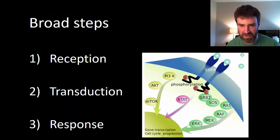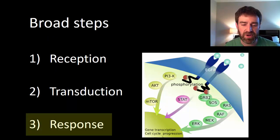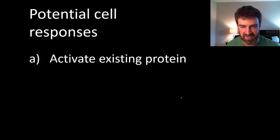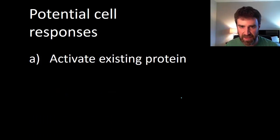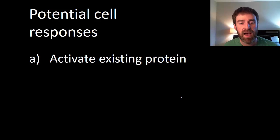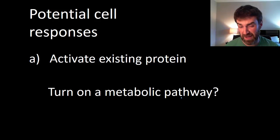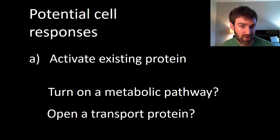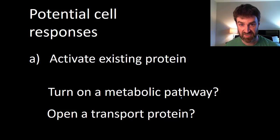Finally, we can talk about the cell's intended response. This falls into two broad categories, sometimes called the cytoplasmic response. In some cases we just want to activate a protein that already exists at the end of the pathway — perhaps turning on a metabolic pathway or opening a transport protein. It could also be the opposite: turning off existing proteins as a result of the incoming signal.